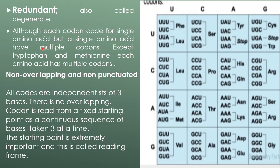Redundancy, also called degeneracy: although each codon codes for a single amino acid, a single amino acid may have multiple codons — except tryptophan and methionine, which each have only one. Non-overlapping and non-punctuated: all codons are independent structures of three bases with no overlapping. The codon is read from a fixed starting point as a continuous sequence of bases taken three at a time. That starting point is called the reading frame.